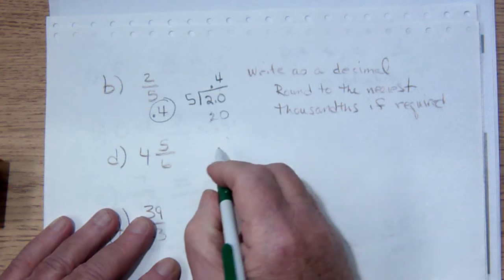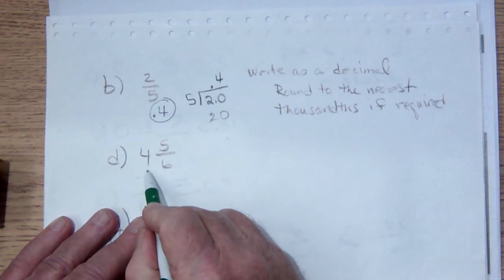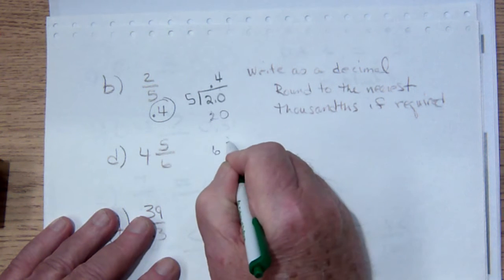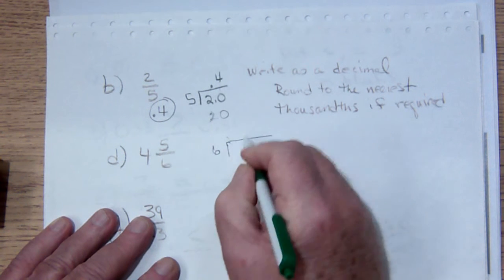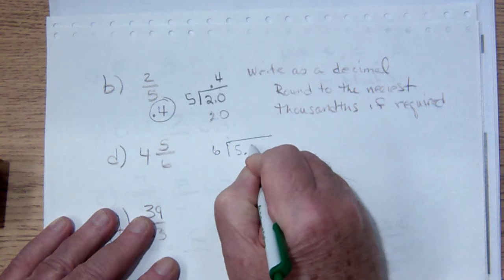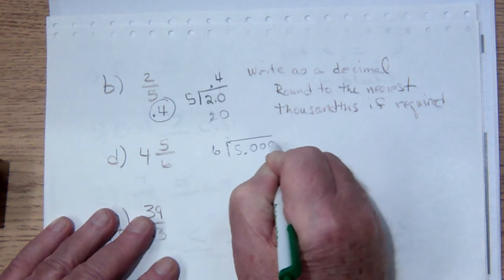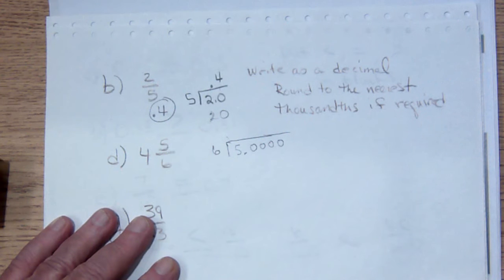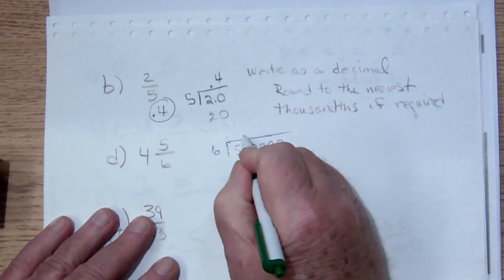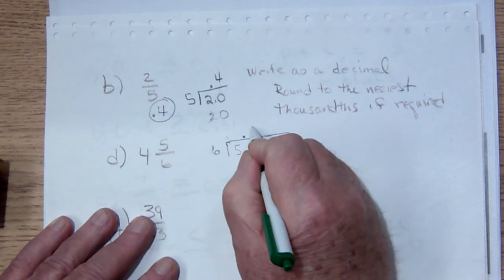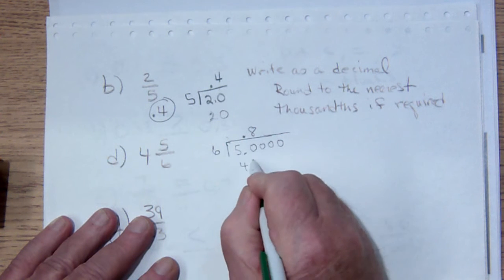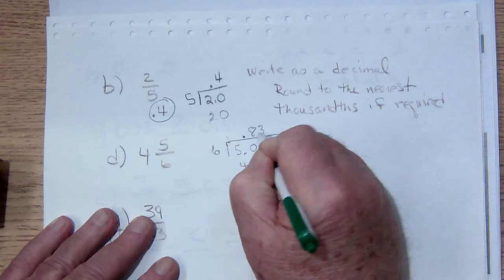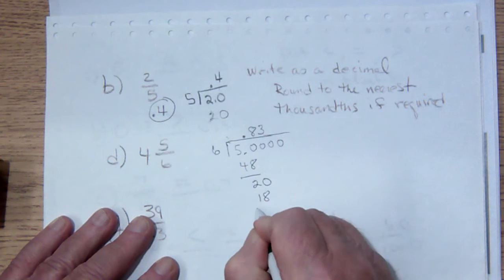Here we're going to know that our answer is going to be 4 as a whole number, but then we're going to be taking 6 into 5.000, because we're rounding to the thousandths if required. So 6 goes into 50, that's where the decimal point will be, 8 times for 48, that's going to be 20, and we will get 3, and that will be 18. But then we get 2 again.